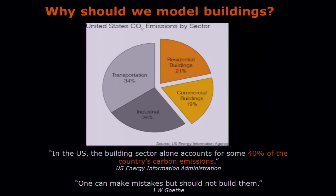So why should we be caring about buildings? Since you are attending this event tonight, I'm sure you're aware that within our overall carbon emission budget, buildings account for roughly 40 percent. That really constitutes a problem because once you have an energy-efficient building stock it takes a really long time to change. With inefficient cars, after five, six, seven, ten years the cars are replaced, but with buildings we are stuck. So I always like to use this quote from Goethe who said: one can make mistakes, but should not build them.